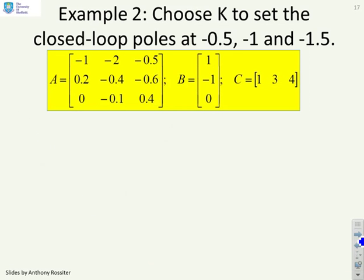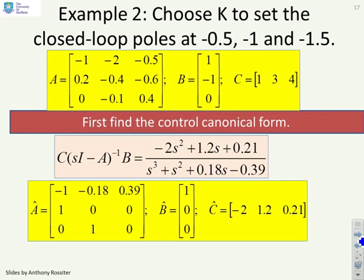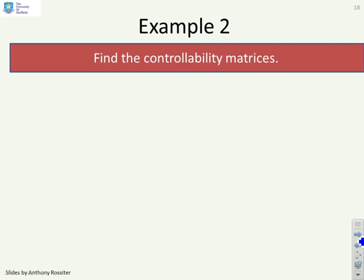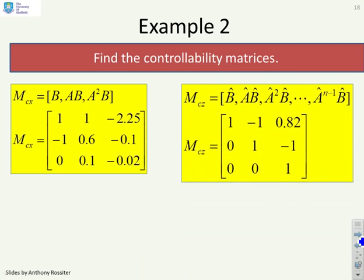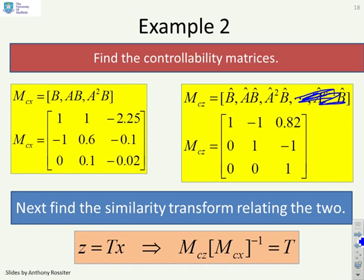Example 2 is done slightly quicker. The system is again not in canonical form, so we use the transformation method. The transfer function is found, and the canonical form has coefficients 1, 0.18, and 0.39 placed in the appropriate positions in Â. To find the similarity transform, we compute the controllability matrices: for the original form it is [B, AB, A²B], and for the canonical form it is [B̂, ÂB̂, Â²B̂], giving T = Mc_z · Mc_x⁻¹.